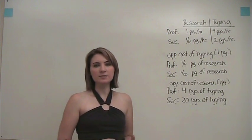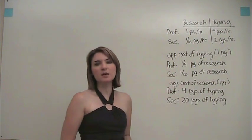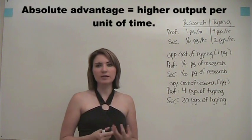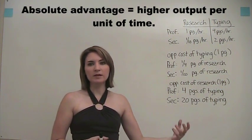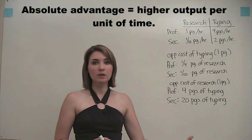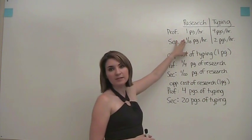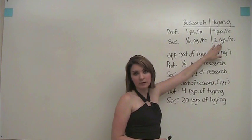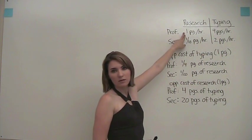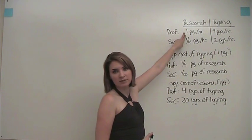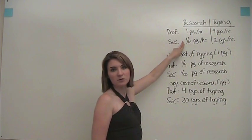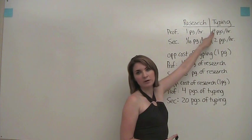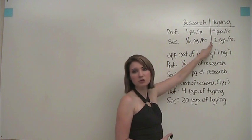The first economic concept regarding the potential for trade is absolute advantage, which refers to how efficiently each party can produce — essentially, which party can produce faster. Looking at our setup, the professor has an absolute advantage in both research and typing. He can produce one page of research per hour whereas the secretary can only produce one-tenth of a page. Similarly, he has an absolute advantage in typing because he can type four pages per hour as opposed to the secretary who can only type two pages per hour.